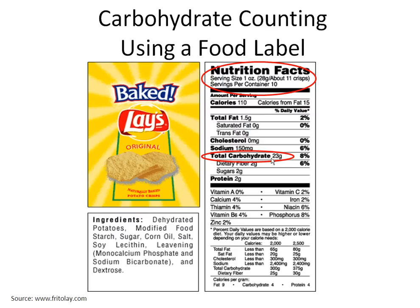This bag of crisps contains 10 servings. So if you eat more than one serving, you are eating more than 23 grams of carbohydrate. For example, if you eat two ounces, you are eating 46 grams of carbohydrate. If you double the portion size, you need to double the total carbohydrate grams.